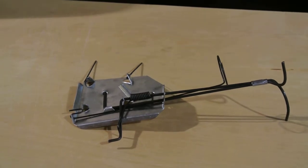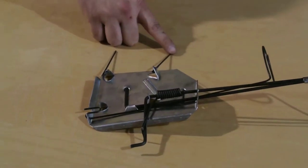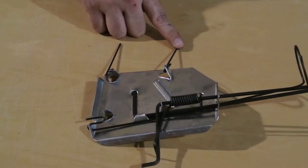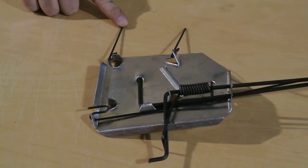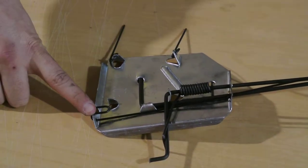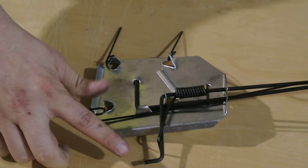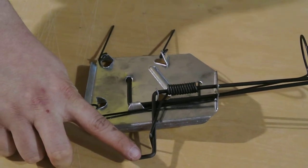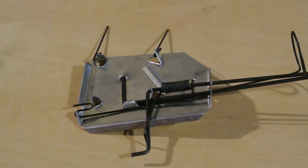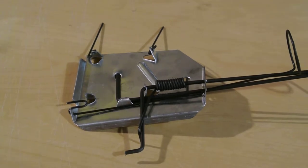Just a quick overview of the trap. We have our A loop wire, our B loop wire, our C trigger wire, and our D active jaw wire. So I can show you how to set the cinch trap.